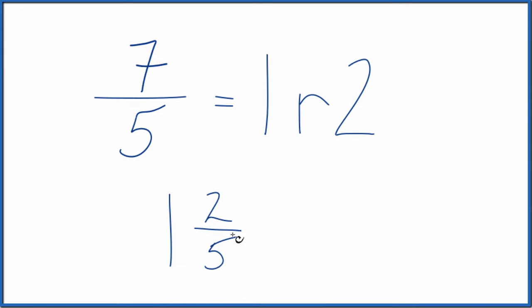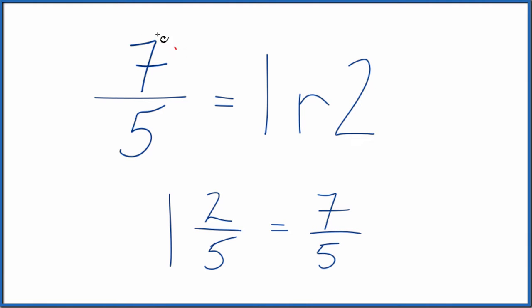We can check our work. 1 times 5 is 5. 5 plus 2 equals 7. And then we bring the denominator across — 7 fifths. And that's what we started out with.